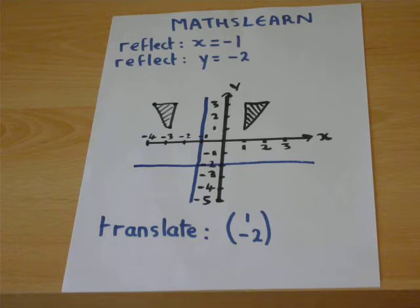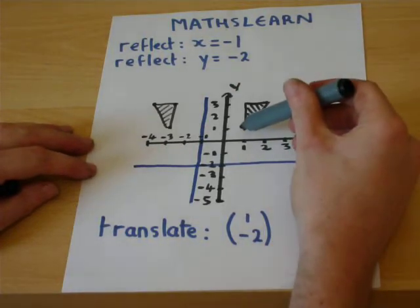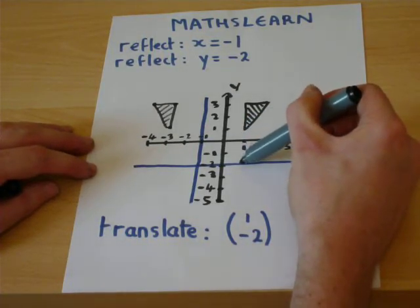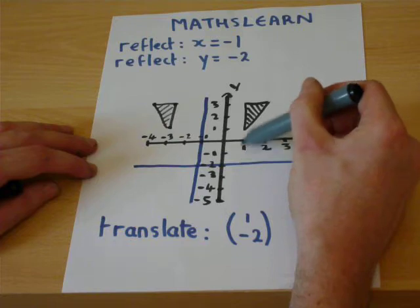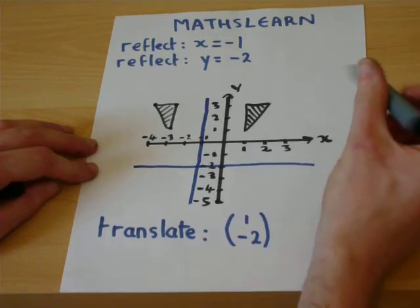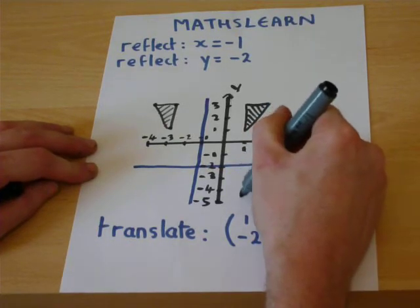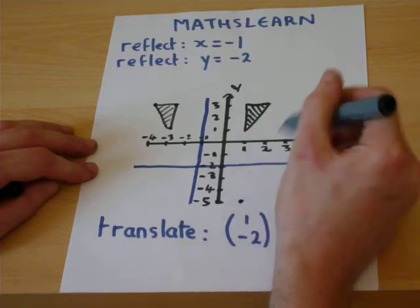And then, will this work as easily? We'll find out. Going through each coordinate, the bottom coordinate is 1, 2, 3 from the mirror line. So once it's reflected, it goes 1, 2, 3 coordinates away.